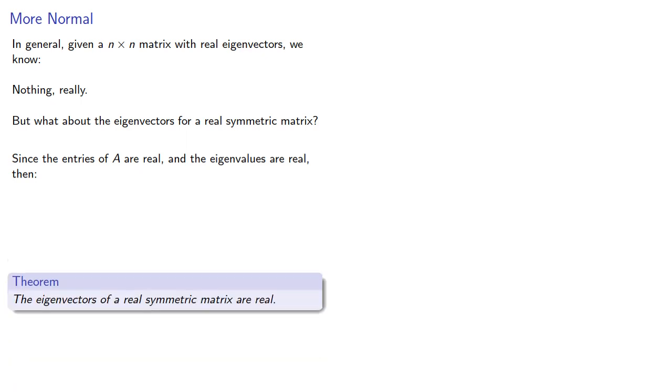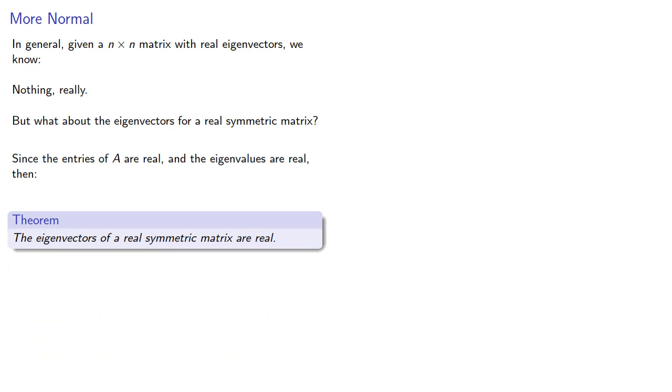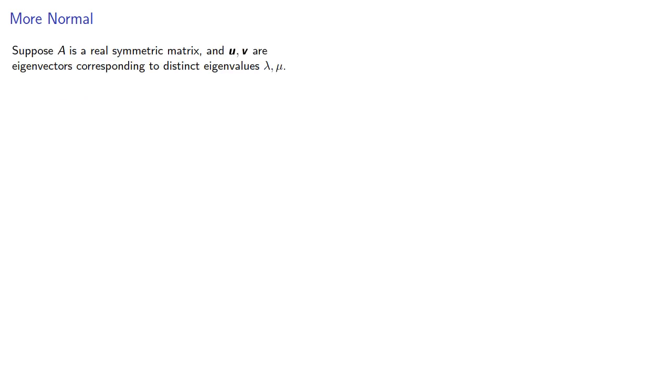In general, given an n-by-n matrix with real eigenvectors, we know nothing really. But what about the eigenvectors for a real symmetric matrix? At least we know that since the entries of A are real and the eigenvalues are real, then the eigenvectors are also real. But what else do we know? Well, again,